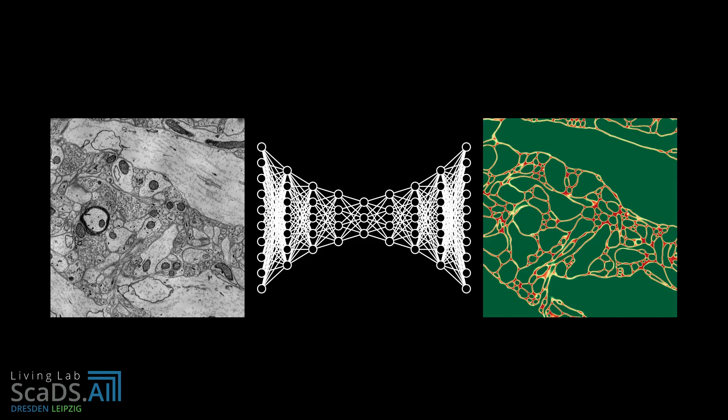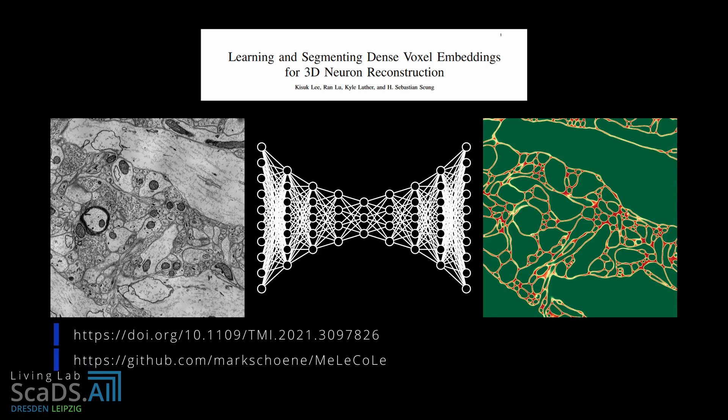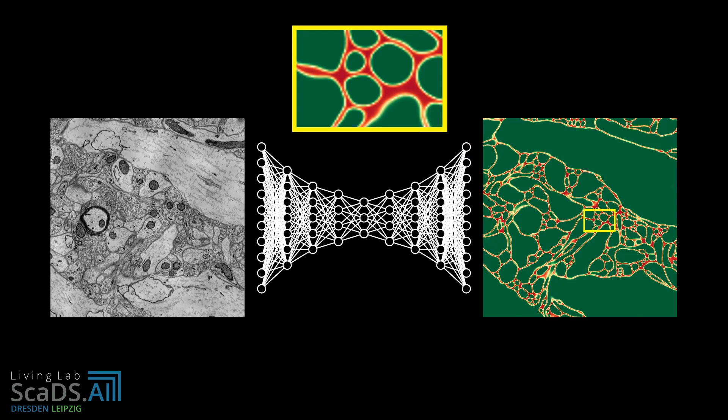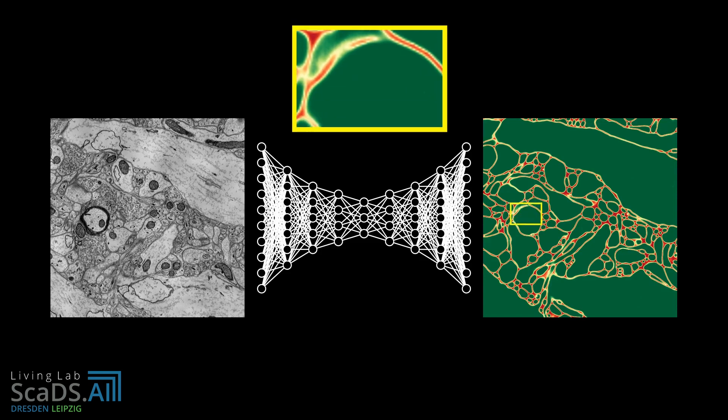More specifically, we use a residual symmetric UNET architecture, which is described in detail by Li et al. The output of the neural network is very accurate in most places. However, there are areas in the image where the prediction is inconclusive.